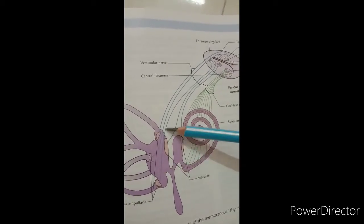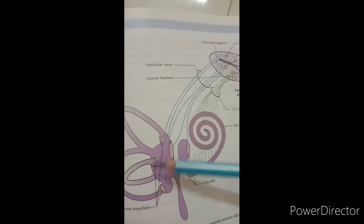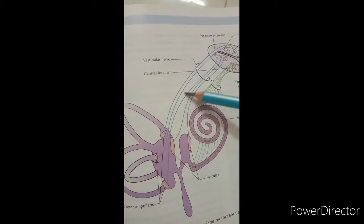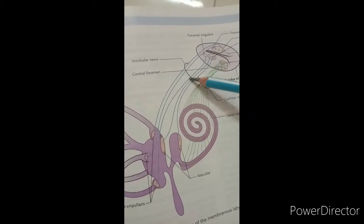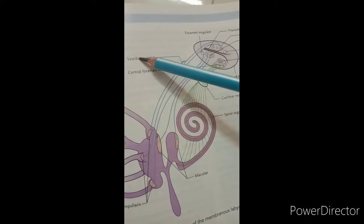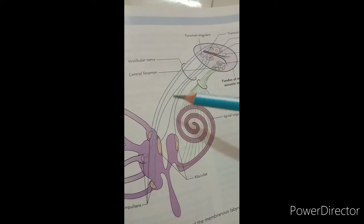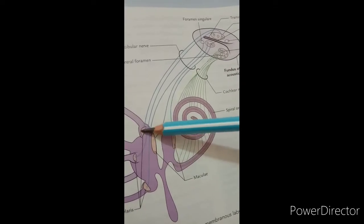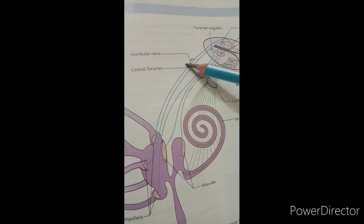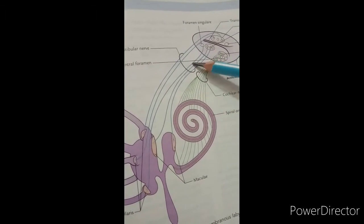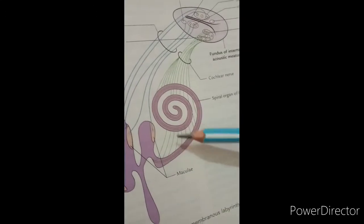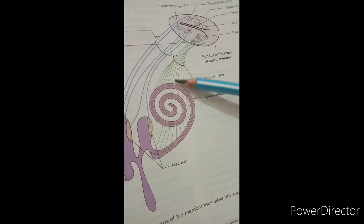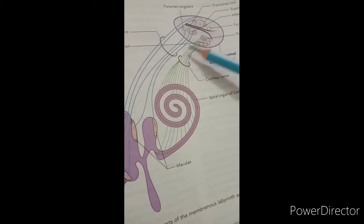The sensory receptors within the three semicircular ducts are the crista ampullaris, and they are concerned with kinetic balance, passing impulses through the vestibular nerve. In summary, the utricle and saccule receptors pass into the vestibular nerve and are related to static and kinetic balance, while the cochlear duct forms the spiral organ of Corti, entering the cochlear nerve and related to hearing.